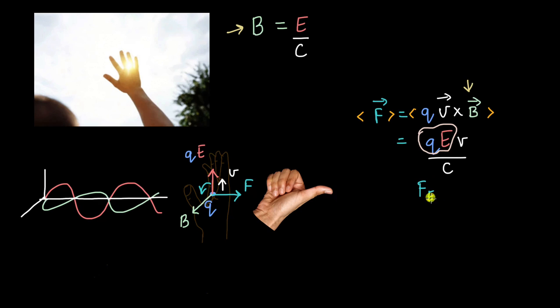This is the force due to the electric field on the charge. And this is multiplied with the velocity, the average velocity with which the charge is moving, divided by C.